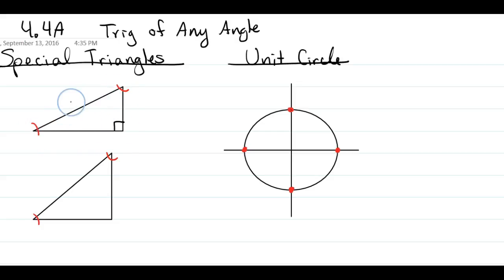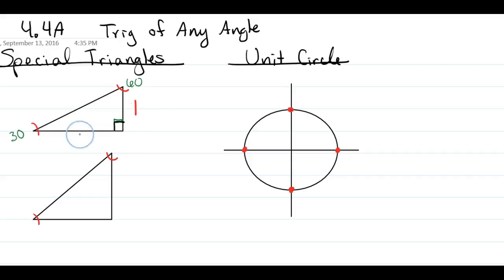This first triangle may be familiar as the 30-60-90 right angle triangle. It's a special triangle we use for many references, with very specific sides. The short side is always 1, the long side is square root of 3 (radical 3 or root 3), and the hypotenuse is 2. You'll need to memorize this triangle.